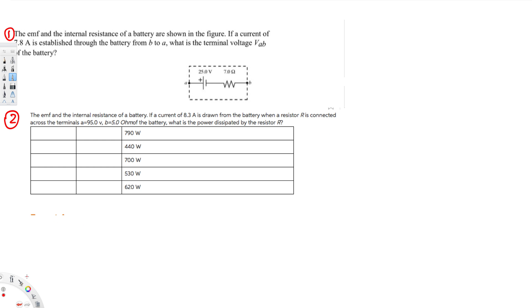Hey what's going on guys, let's do this problem right here. The first question is asking the EMF and the internal resistance of a battery are shown in the figure. If a current of 7.8 ampere is established through the battery from B to A, what is the terminal voltage vab of the battery?